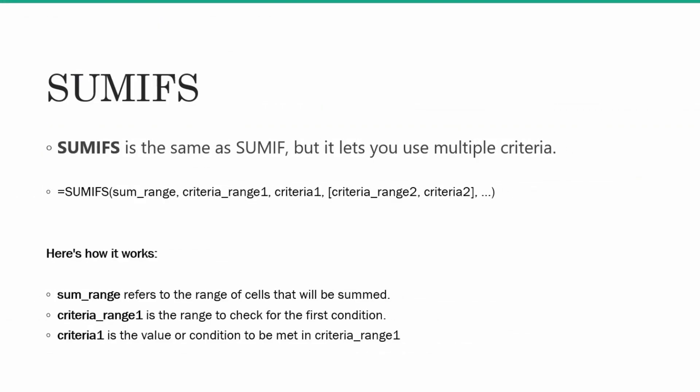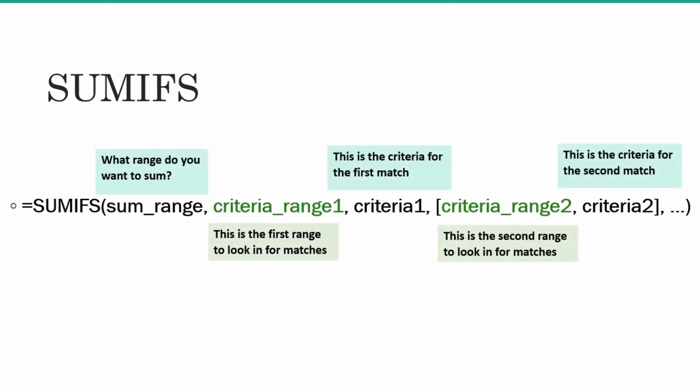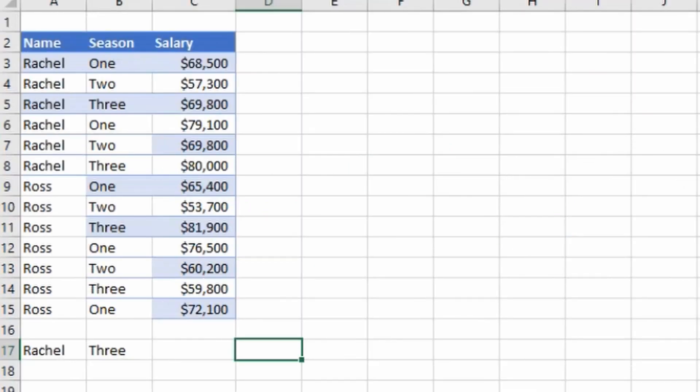Let's deep dive a little more. Your sum range is the value which you want to sum. Criteria range 1 is the first range to look for matches. Criteria 1 is your first criteria to match. Criteria range 2 is the second range to look for matches, and criteria 2 is the criteria you want to find in criteria range 2. Let's see the practical application of the SUMIFS formula.